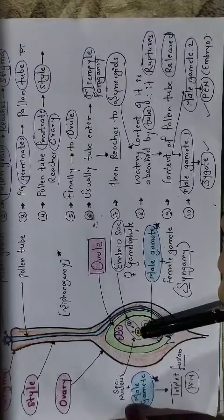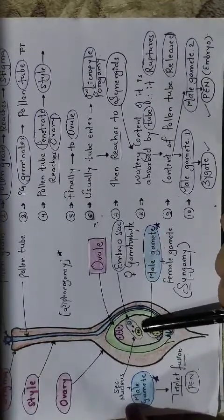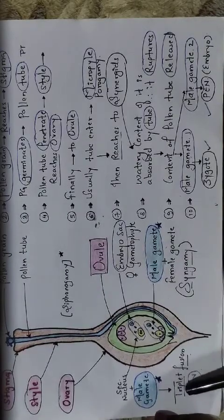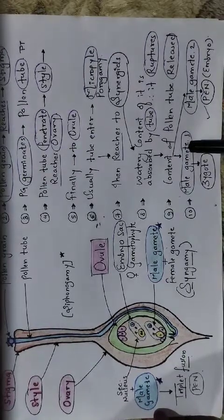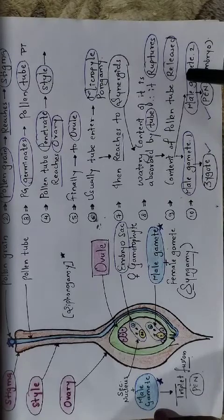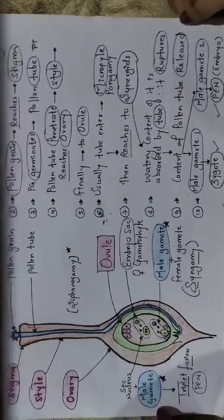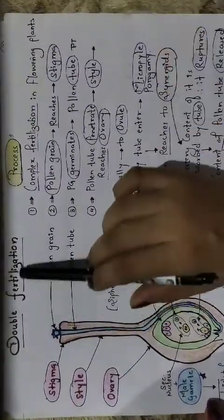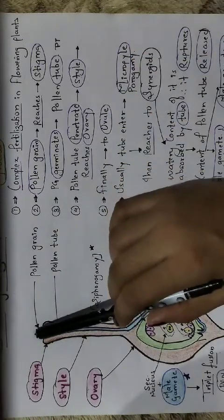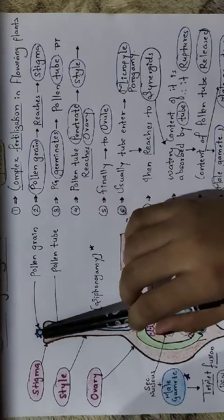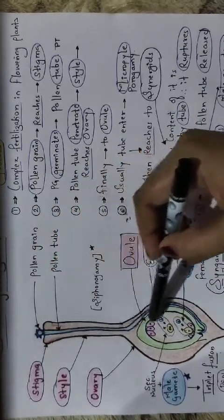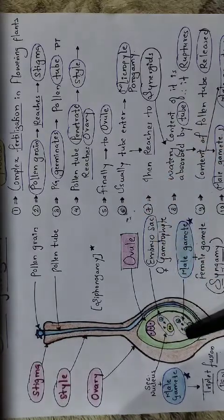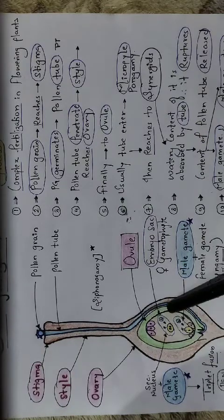The second male gamete fuses with the secondary nucleus or polar nuclei. Since the secondary nucleus already has two nuclei, fusion with one male gamete nucleus forms a triploid — this is called triploid fusion. So male gamete one fuses with the female gamete to form a zygote, and male gamete two fuses with the secondary nucleus. Because two fusions occur, the process is called double fertilization.